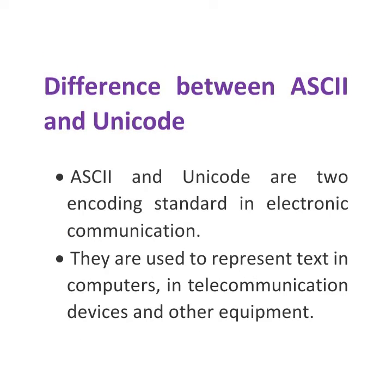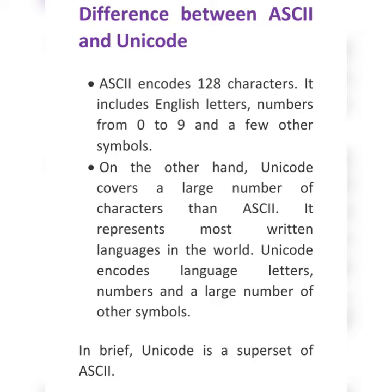ASCII and Unicode are two encoding standards in electronic communication. They are used to represent text in computers, in telecommunication devices and other equipment. ASCII encodes 128 characters, including English letters, numbers from 0 to 9, and a few other symbols.